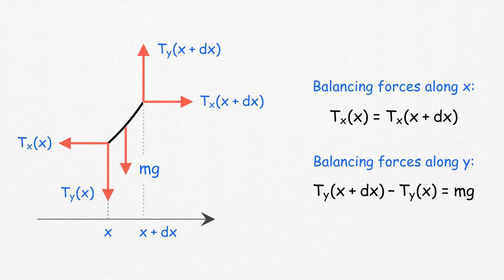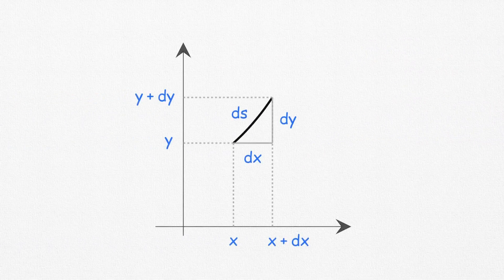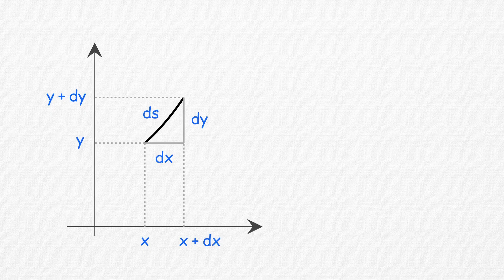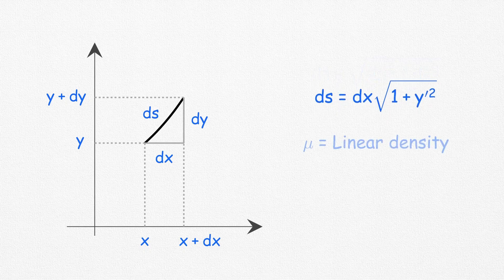To dive into the second equation, we need to determine the mass m of this segment. The length ds is extremely small and hence can be determined using Pythagoras theorem. Taking dx out of the root, we obtain this expression, where dy/dx is the first derivative of the function. If μ is the linear density of the wire, then the mass m can be expressed as this.